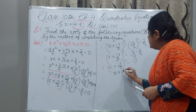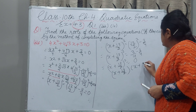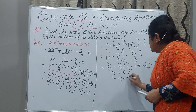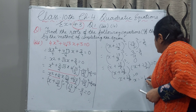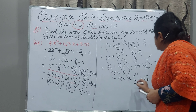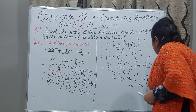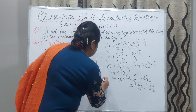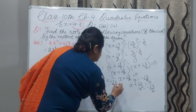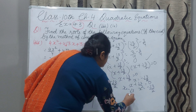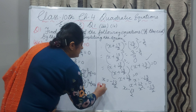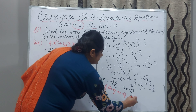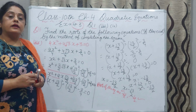This is a perfect square equal to zero, so you can write it two times. First: x + √3/2 = 0, which gives x = −√3/2. And the second time: x + √3/2 = 0, which also gives x = −√3/2. So both the roots of the equation are −√3/2 and −√3/2. The same roots are coming, and that is your answer.